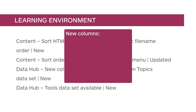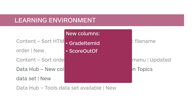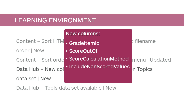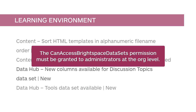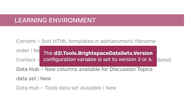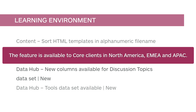New columns are available for the Discussion Topics dataset including Grade Item ID, Score Out of, Score Calculation Method, Include Non-scored Values, and Version. The Can Access Brightspace Datasets permission must be granted to administrators at the org level, and the D2L, Tools, Brightspace Datasets, Version configuration variable must be set to Version 3 or 4. This feature is available to core clients in North America, EMEA, and APAC.